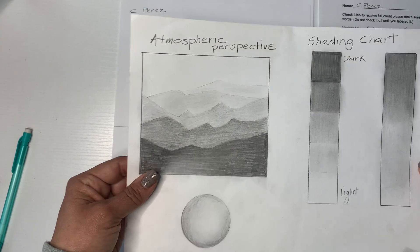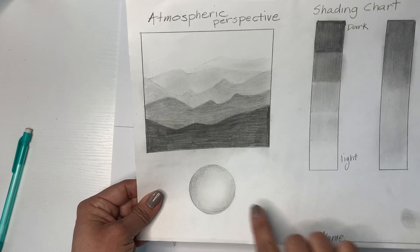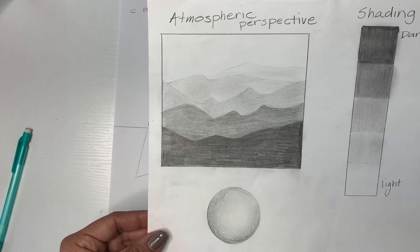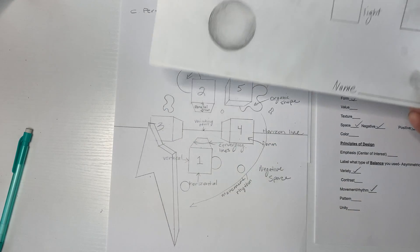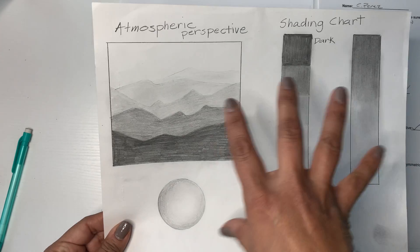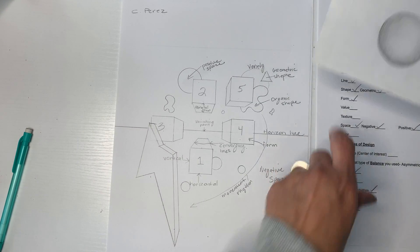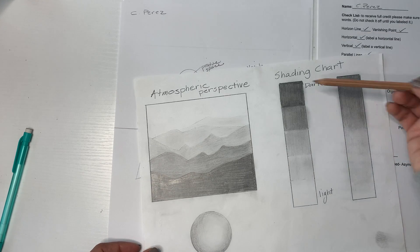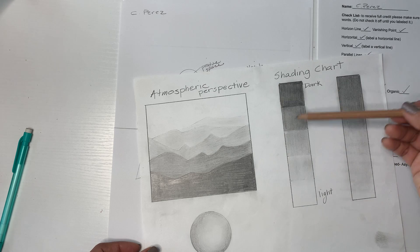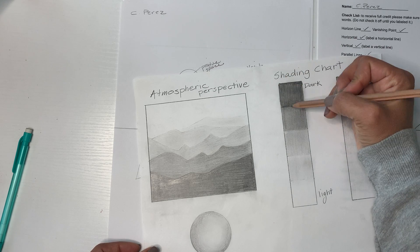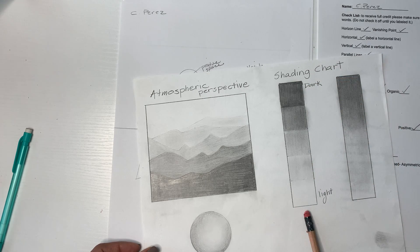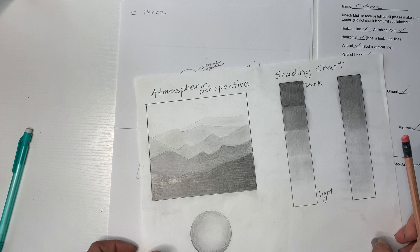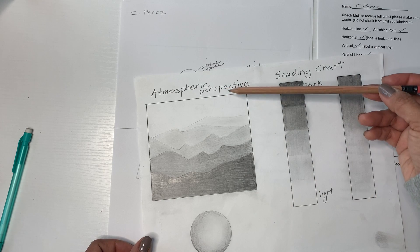I have these handouts that I always give out. It's going to be a straightforward composition where we create value scales. If you took basic studio, this is important — this is a shading chart. When we create the value scale, in the first square we try to get as dark as we can, then gradually get lighter and lighter to the light of the page.